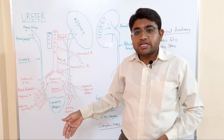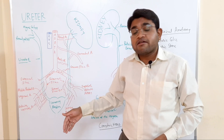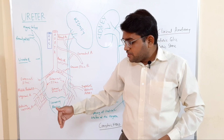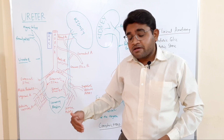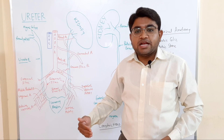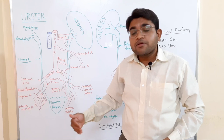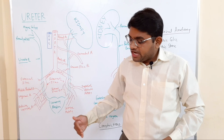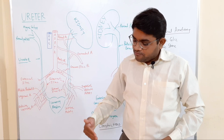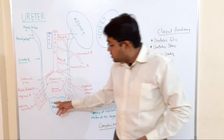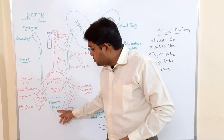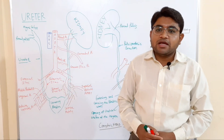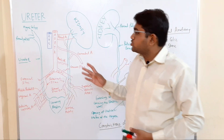From the ischial tuberosity the ureter turns its direction medially and forward, running medially and anteriorly to reach the poles of the urinary bladder and enter into it.